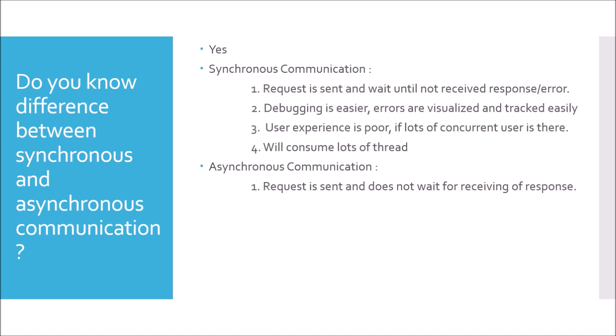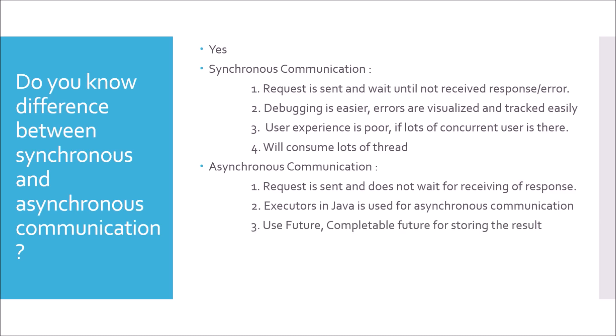How do you store the response when it is received in asynchronous communication? For this, we use executors. Executors is used for asynchronous communication, and with Java 8 we have Future and CompletableFuture for storing the result with the help of callbacks. Debugging is harder and error tracking is more difficult because with asynchronous communication, one async call may chain into another and another, going on to several extents.